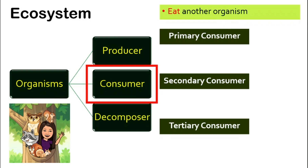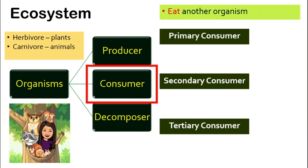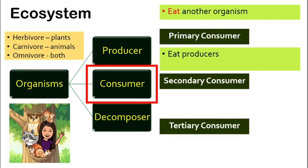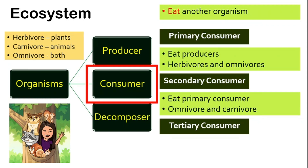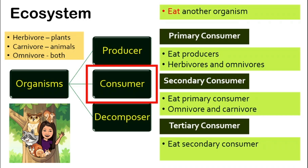Let's have a little bit of revision. Herbivores are the animals that eat only plants, whereas carnivores are organisms that eat animals, and omnivores eat both. Primary consumers eat producers, and they are normally herbivores and also omnivores. Secondary consumers eat primary consumers, and they are normally omnivores and carnivores. And tertiary consumers eat secondary consumers, and they are mostly carnivores.